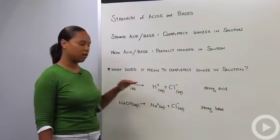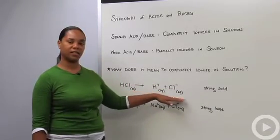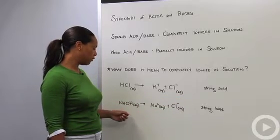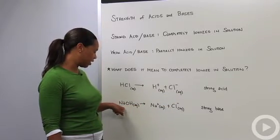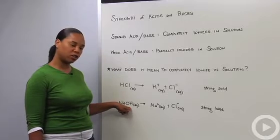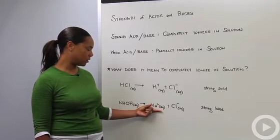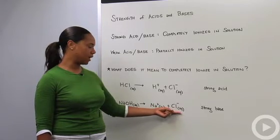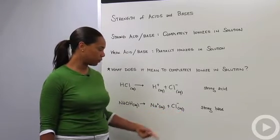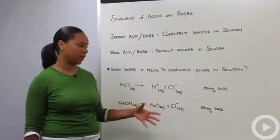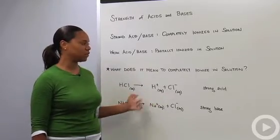Similarly, if we have a strong base, a common strong base is sodium hydroxide (NaOH). NaOH aqueous would break up into its components: positive sodium ion (Na+) and a negatively charged hydroxide ion (OH-). That's an example of a strong base. Now you know what it means for something to completely ionize in solution.